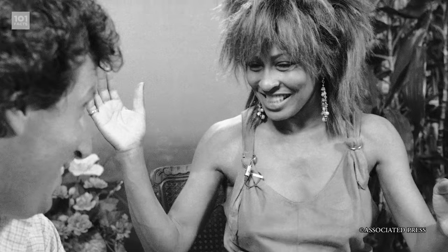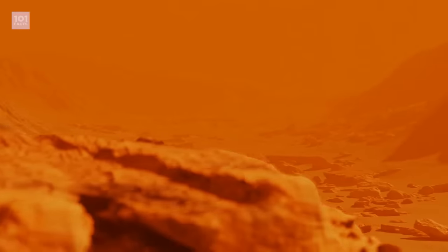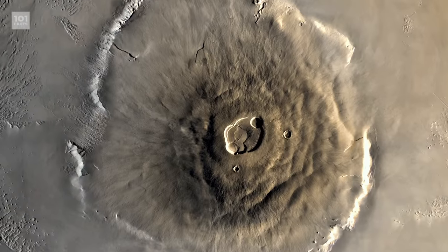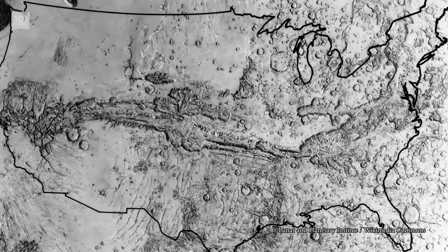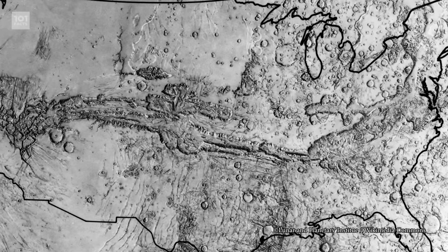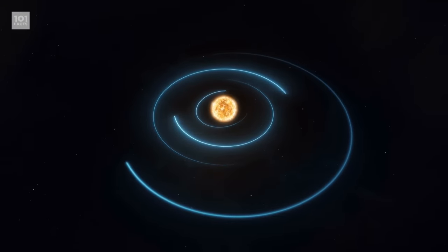Tina Turner was likely singing about Mars in her 1966 hit song, River Deep Mountain High, because Mars is home to Olympus Mons, a 17-mile-high mountain and the highest mountain in the solar system. As well as the Valles Marineris, which descends six miles deep, making it the deepest valley in the solar system.